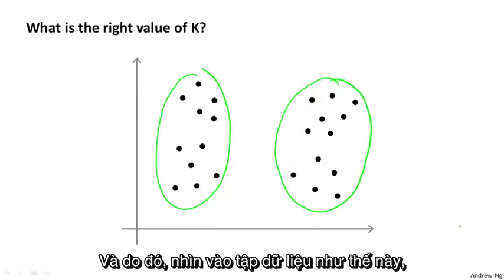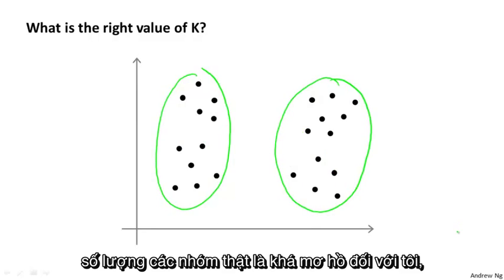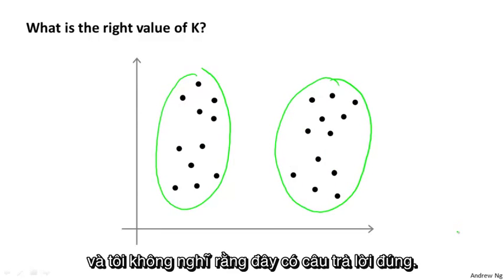And so, looking at the data set like this, the true number of clusters, it actually seems genuinely ambiguous to me, and I don't think there is one right answer.